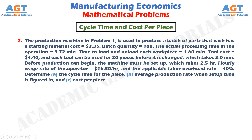Before production can begin, the machine must be set up, which takes 2.5 hours. The hourly wage rate of the operator equals $16.50 per hour, and the applicable labor overhead rate equals 40%. Determine: (a) the cycle time for the piece, (b) average production rate when set-up time is figured in, and (c) cost per piece.